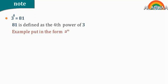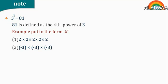Example: Put in the form of A to the power M. Number 1: 2 times 2 times 2 times 2 times 2. Number 2: negative 3 times negative 3 times negative 3. Number 3: 5 times 5 times 5. Number 4: negative 7 times negative 7.